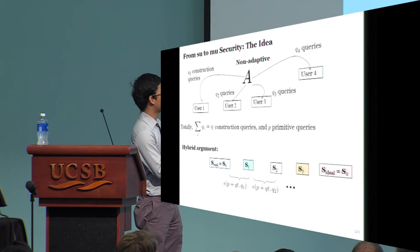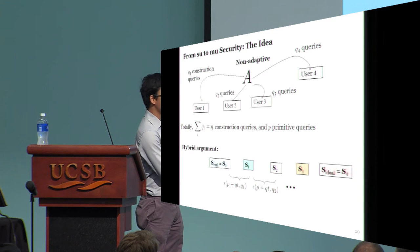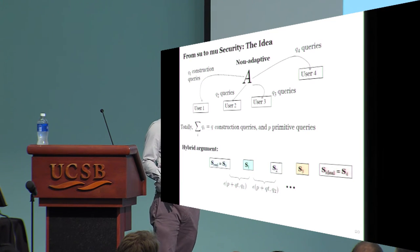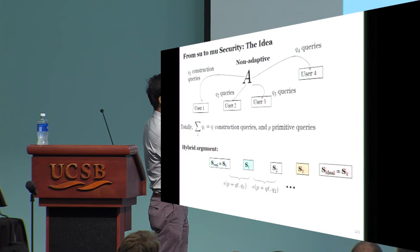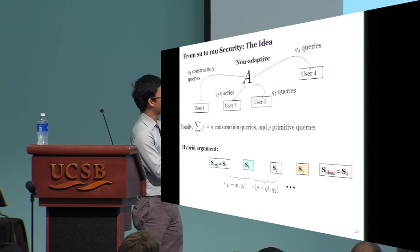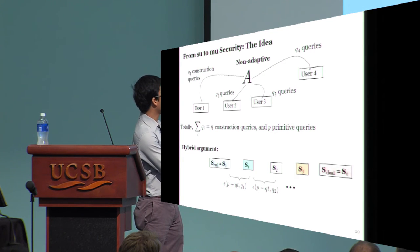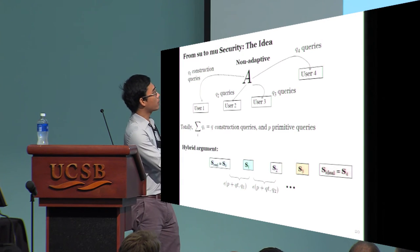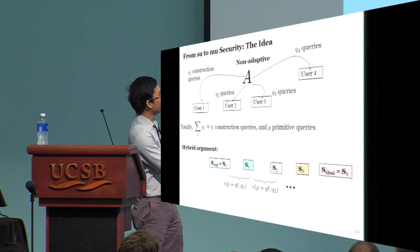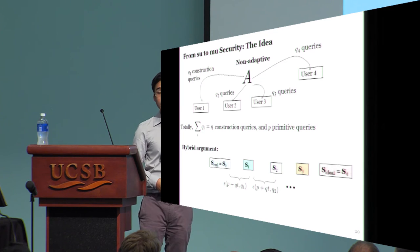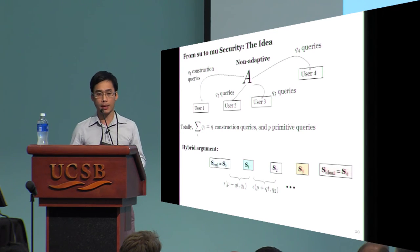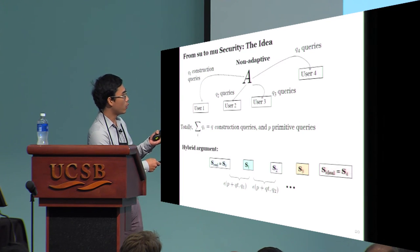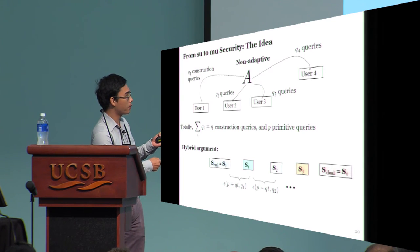For example, consider the systems S0 and S1. Now all we need to care about is just the construction queries on the first user. It's why there are only Q1 construction queries instead of Q. But the construction queries on the other users won't vanish that easily. Internally, they will make some calls to the primitives, and so you have to account for those primitive queries.